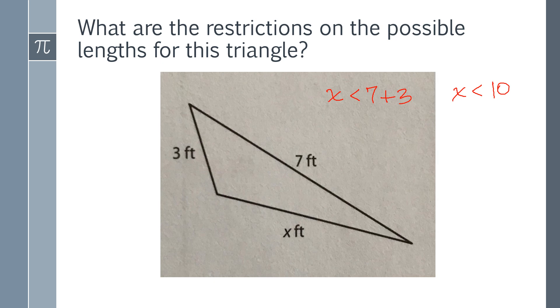But 7 minus 3 also needs to be less than x. So now we're going to end up with 4 is less than x. So the restriction on this is going to be that 4 must be less than x, which will be less than 10. So this is the type of inequality they're looking for in this type of problem.